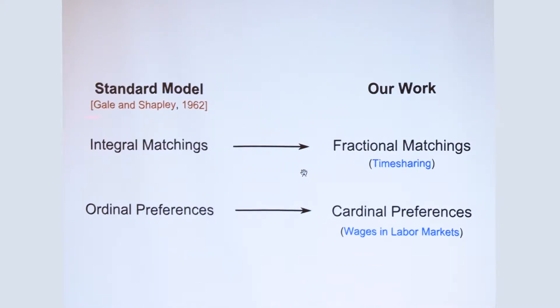So the model of Gale and Shapley, which I'm going to call the standard model, makes two important assumptions. One, it assumes that the matchings are integral, meaning two agents are either completely matched or completely unmatched. The model also assumes that agents have ordinal preferences, typically specified in the form of ranked order lists. In our work, we are going to generalize both of these assumptions. So instead of integral matchings, we are going to work with fractional matchings, which means that the matching weights can be anything between zero and one as well.